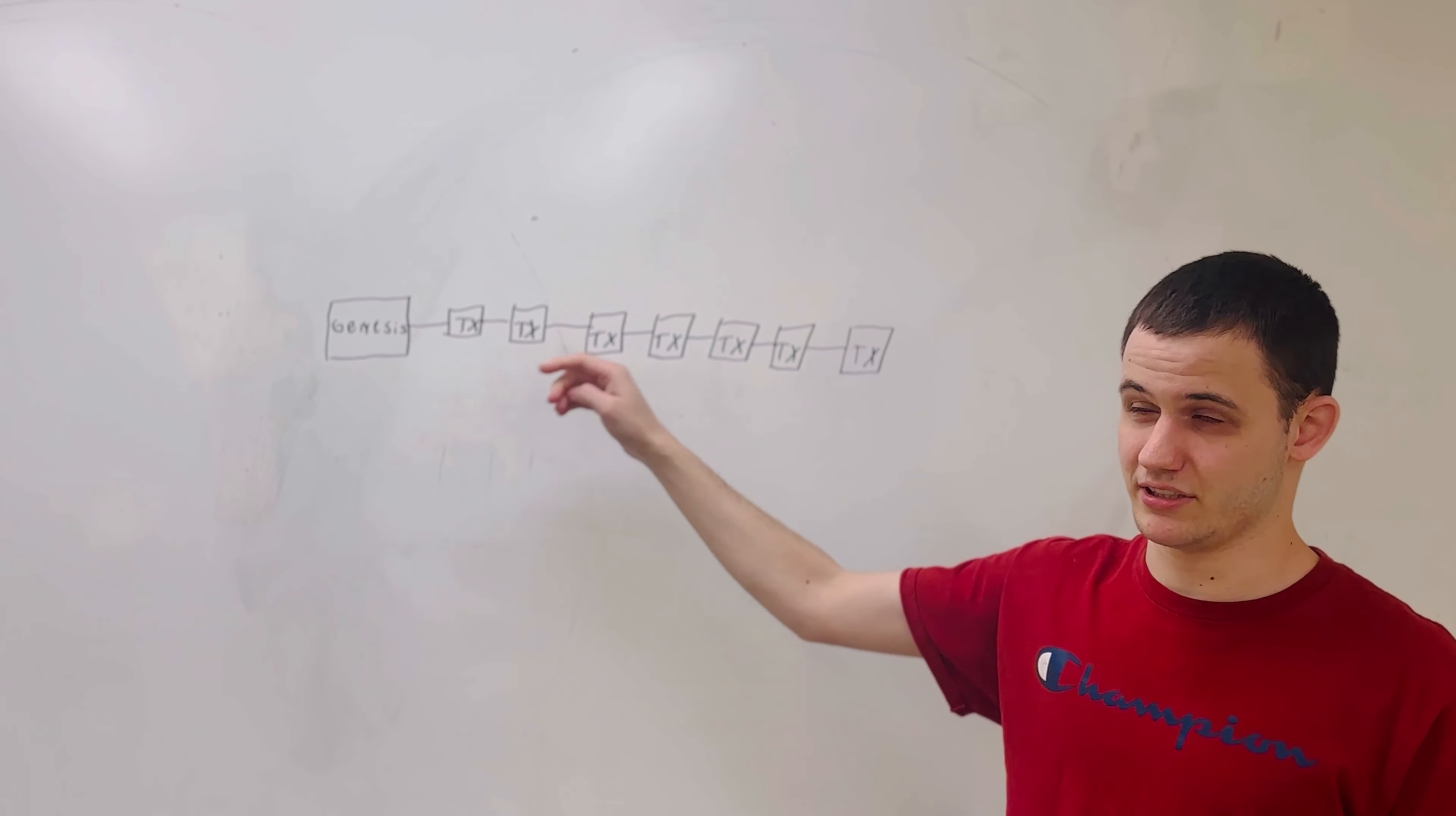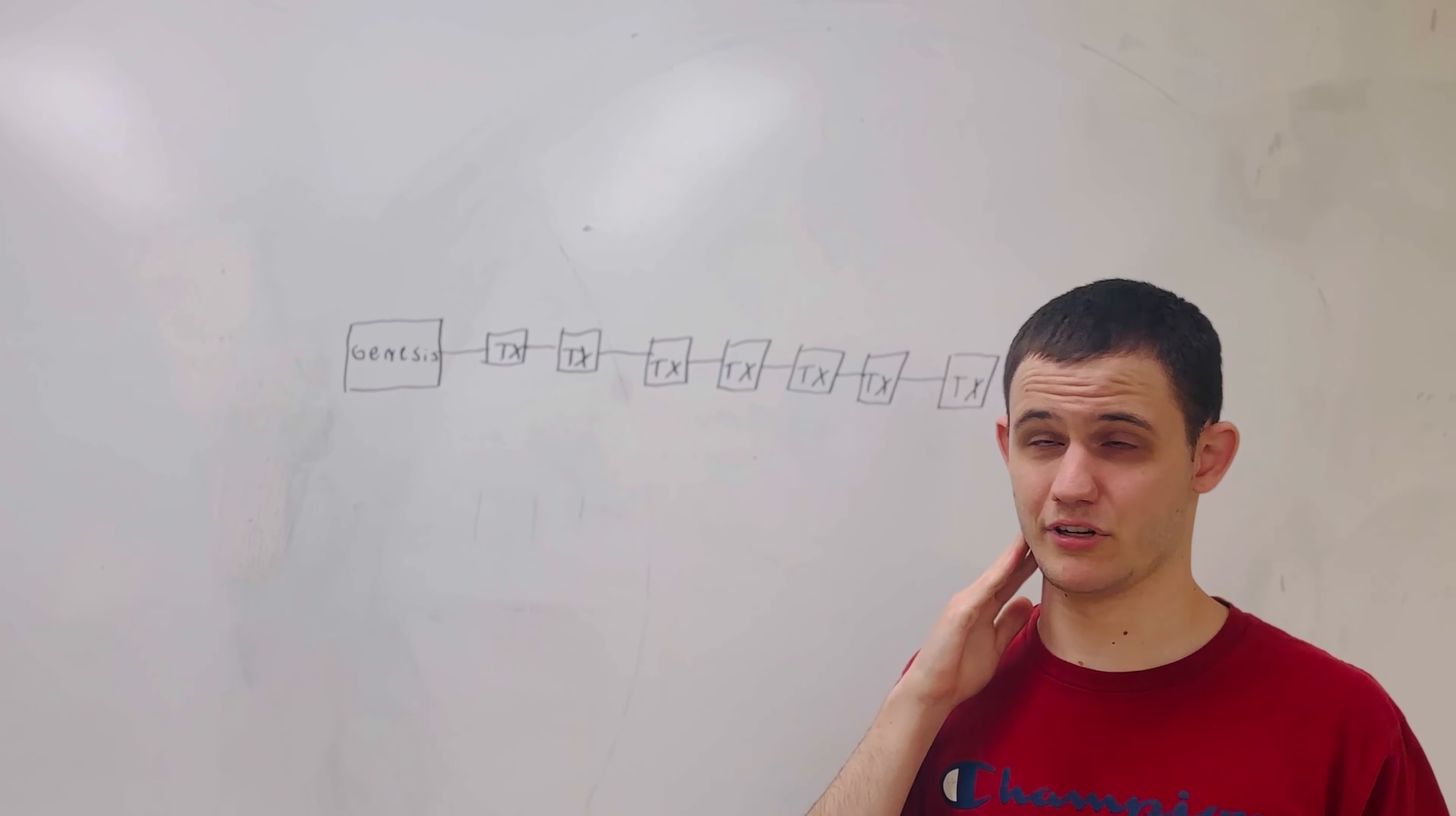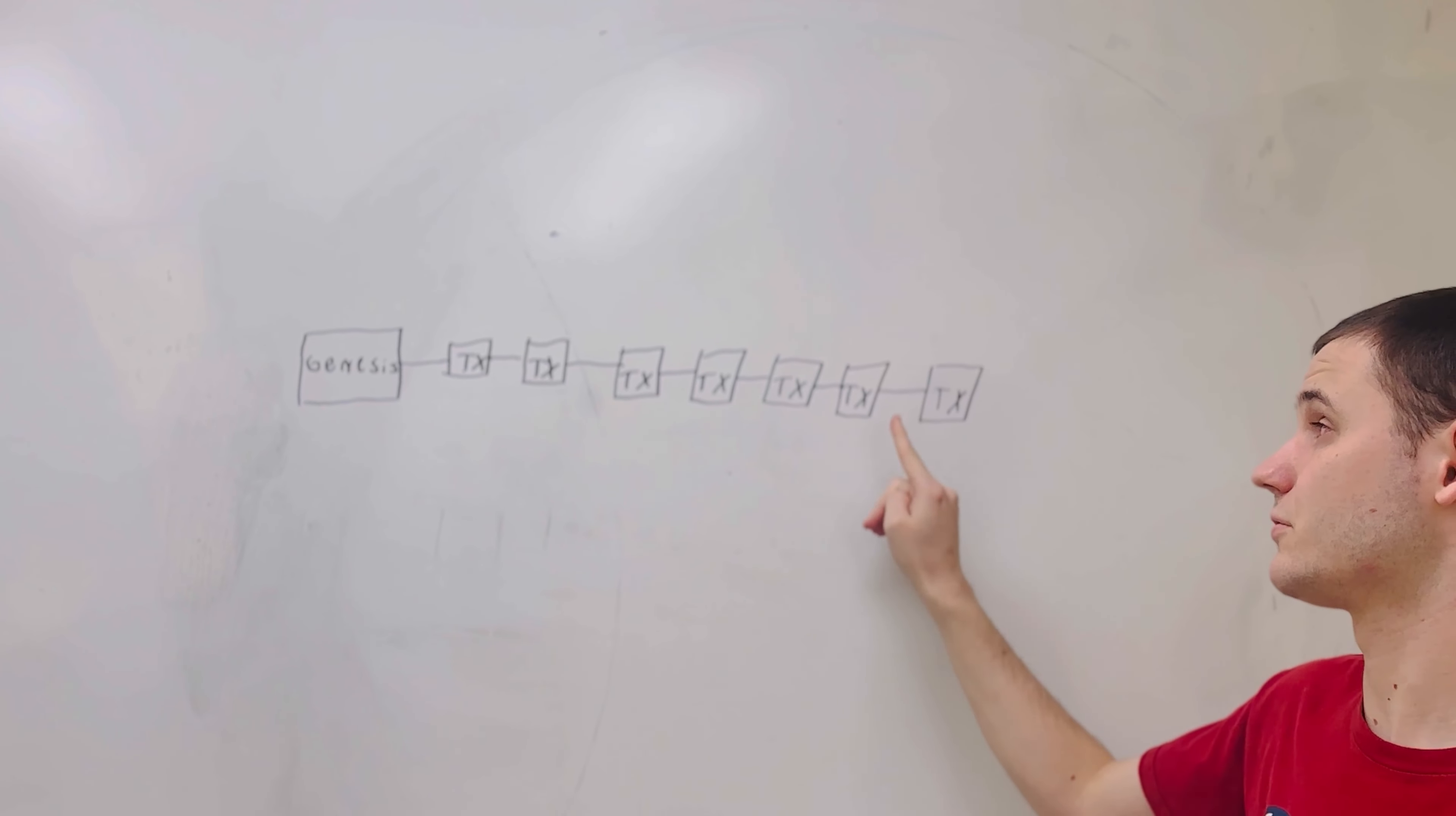So when someone creates a token, they have an issuance transaction, they have a transaction that originally issued that token, and then they have subsequent transactions where maybe they spent it, they gave it to someone else, and it got passed around for a little while.